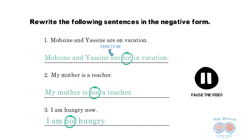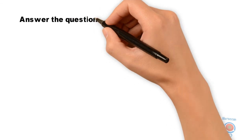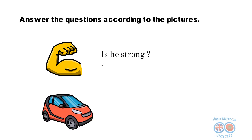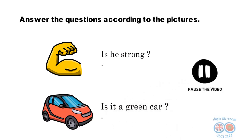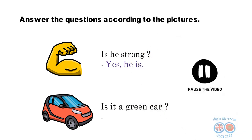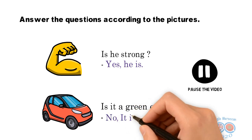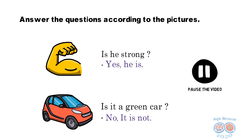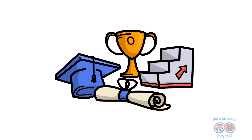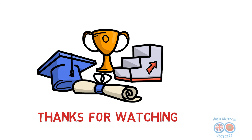We move now to the last exercise: answer the questions according to the pictures. Is he strong? Yes, he is — can you see his muscles? Is it a green car? No, it is not — it is red. Well, I hope you enjoyed that lesson. I know you are a serious student and you are going to make good progress. Thanks for watching and see you in the next video. Bye!